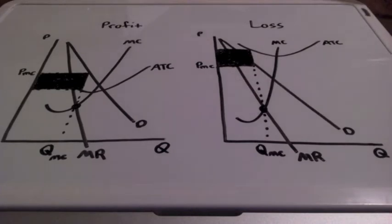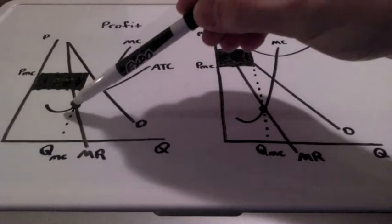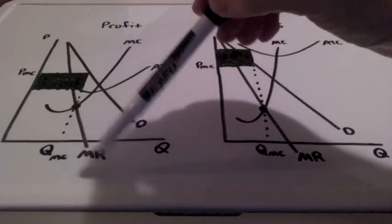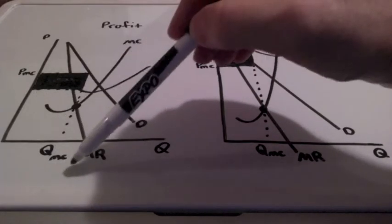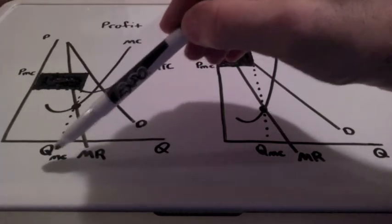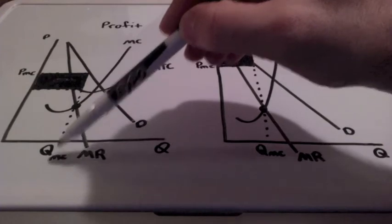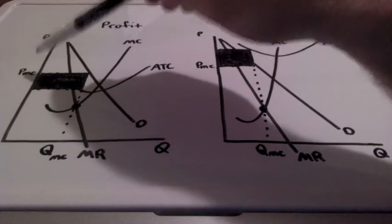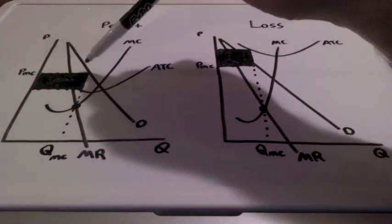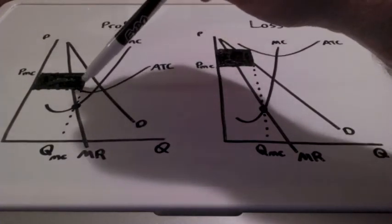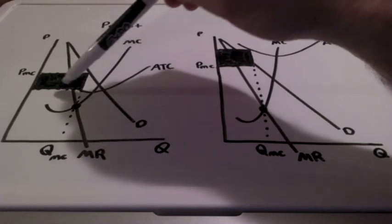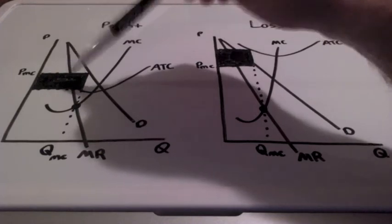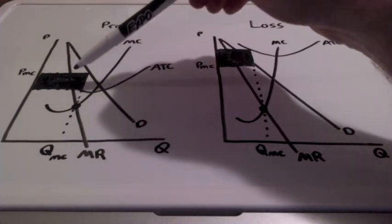For a profit, we find where marginal revenue equals our marginal cost. Our profit maximizing quantity labeled QMC for monopolistic competition is labeled here. We bring this up to demand and our price is labeled PMC and from our demand curve down towards touching average total cost, this entire area represents the short run profit for the firm.